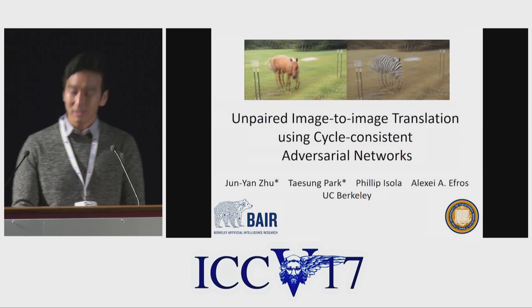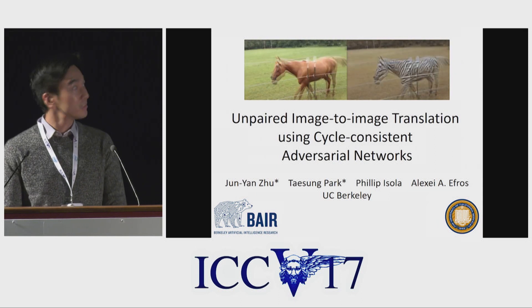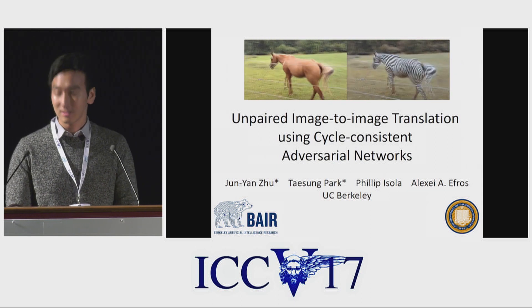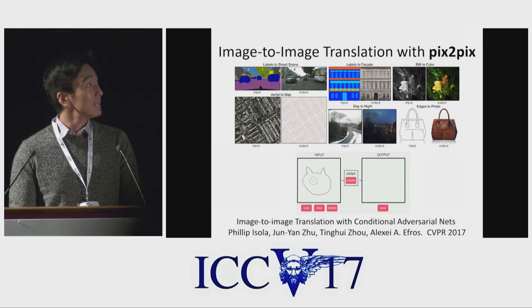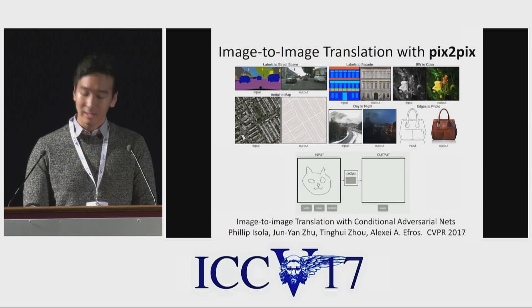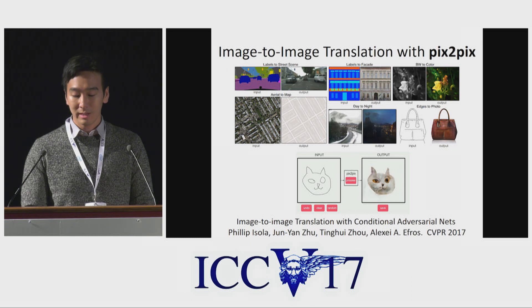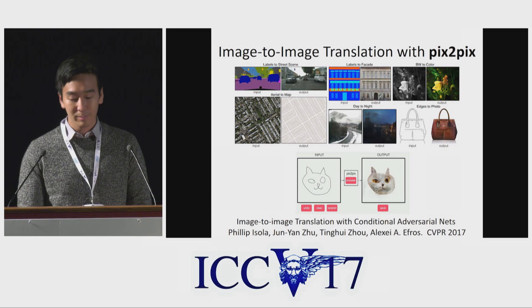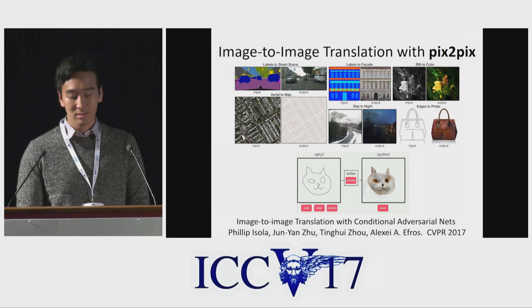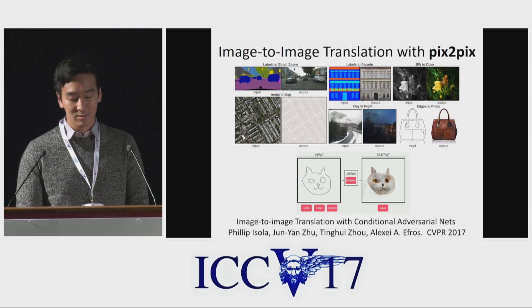We present unpaired image-to-image translation using cycle-consistent adversarial networks. At CVPR, we formulated the image-to-image translation problem and presented the pix2pix framework. The idea is to translate an image in one domain into another, such as grayscale to color and famously sketches to cats.